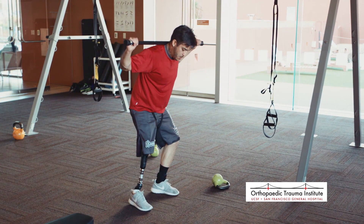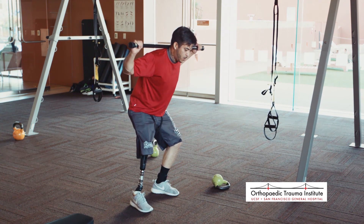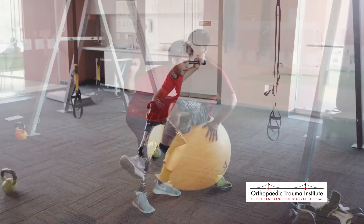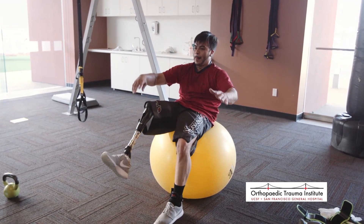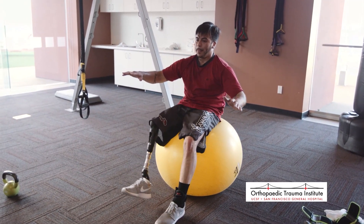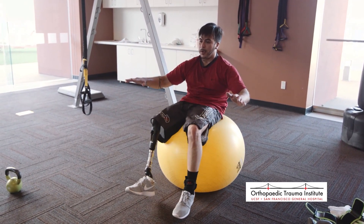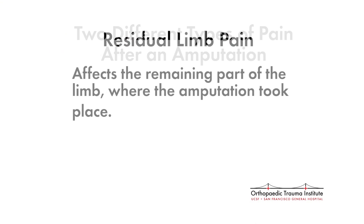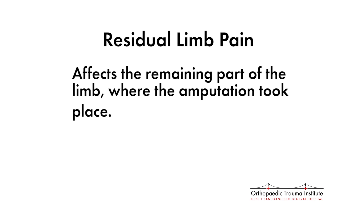As with any surgical procedure, pain management will play a significant role in an amputee's recovery. Here again is Dr. Pascal discussing the types of pain an amputee may typically experience and how best to treat them. There are two types of pain that a patient might experience after an amputation: residual limb pain and phantom limb pain. Residual limb pain affects the remaining part of the limb where the amputation took place.